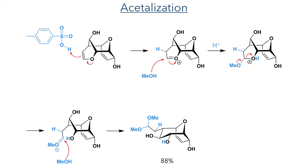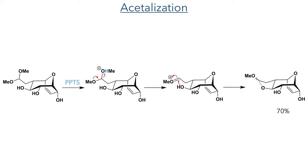To produce the intramolecular acetal, this molecule was reacted with PPTS which protonates the dimethyl acetal, eliminating a molecule of methanol. The resulting oxonium intermediate then reacts in an intramolecular fashion with one of the hydroxyl groups to produce a 5-membered cyclic acetal in a 70% yield.